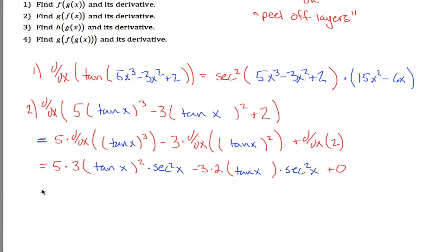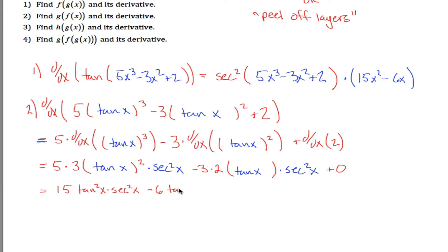You don't really have to clean things up too much here. Simplifying, we get 15 tangent squared x times secant squared x, minus 6 tangent of x times secant squared x. I'll leave that as my final answer.